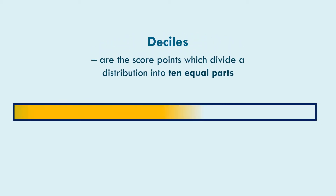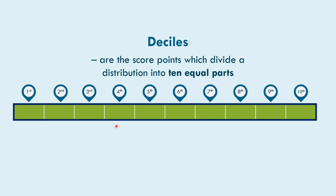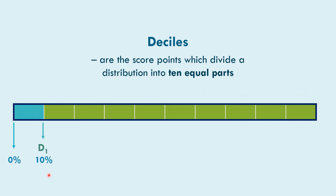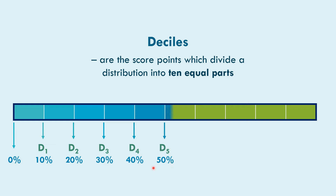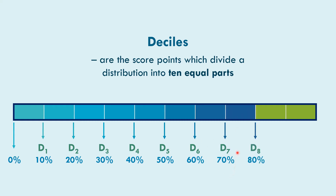What are deciles? Deciles are the score points which divide the distribution into 10 equal parts — D1 through D9. Starting from 0%, each decile adds 10%: D1 is 10%, D2 is 20%, D3 is 30%, D4 is 40%, D5 is 50%, D6 is 60%, D7 is 70%, D8 is 80%, D9 is 90%, and then 100%.